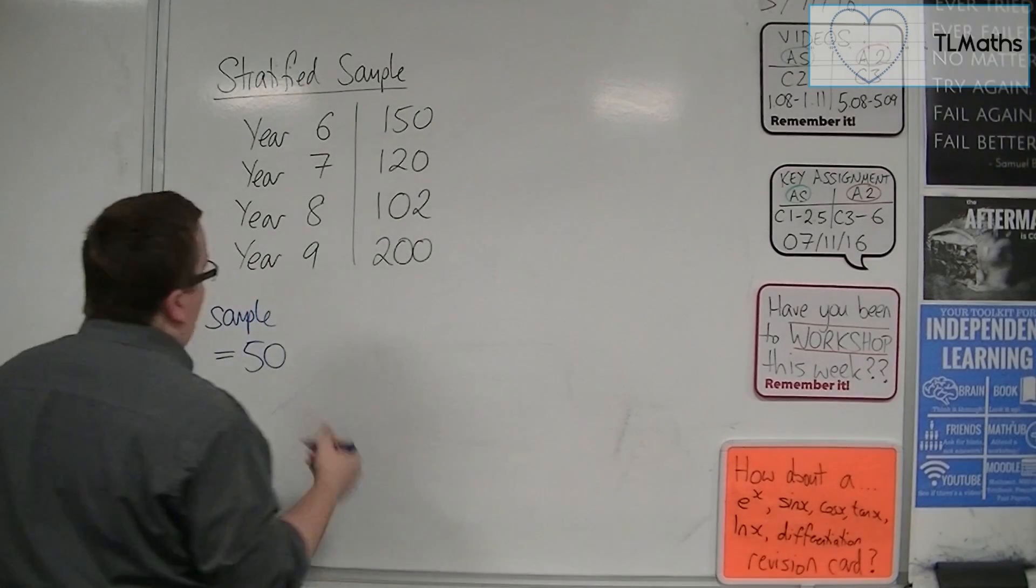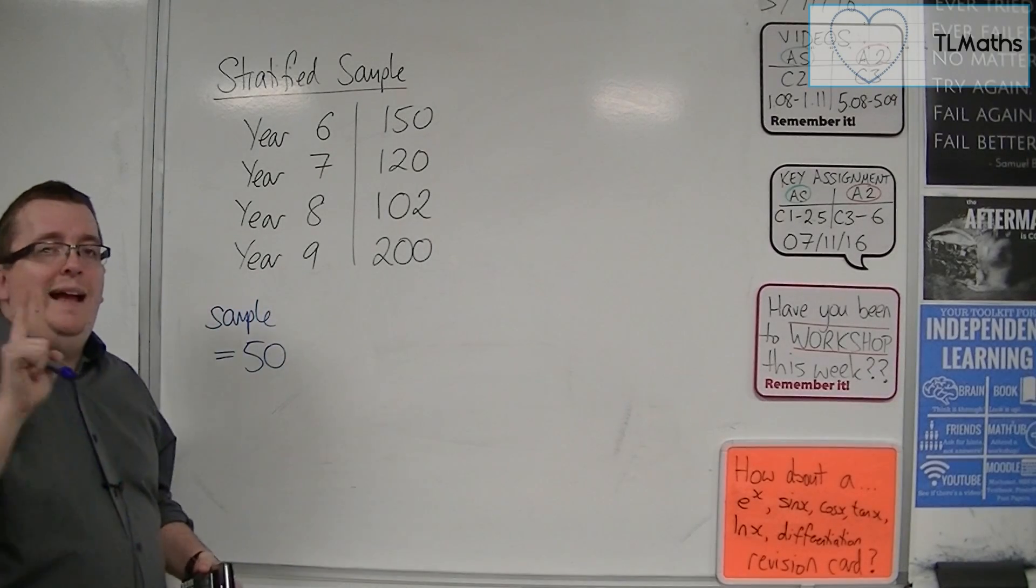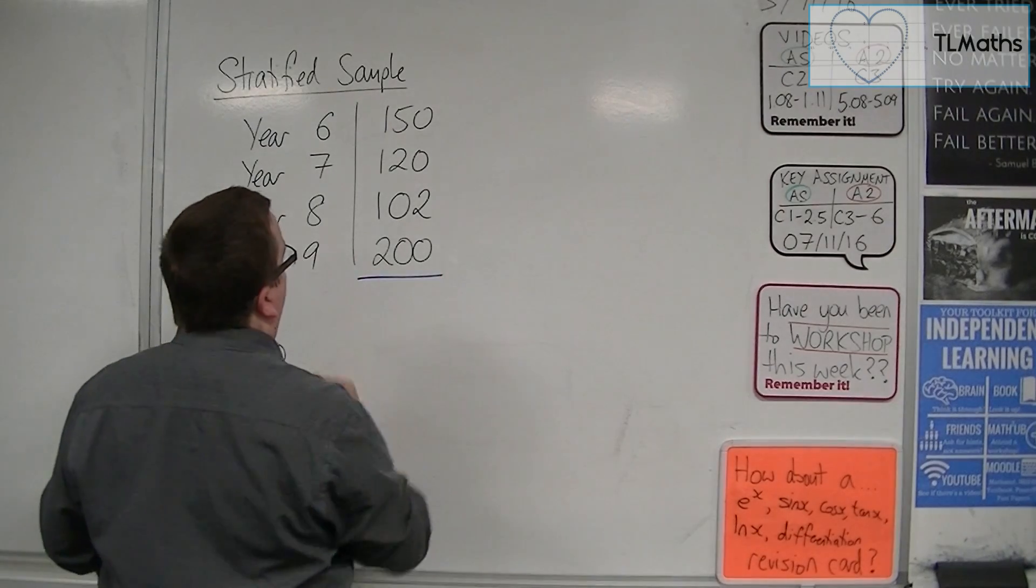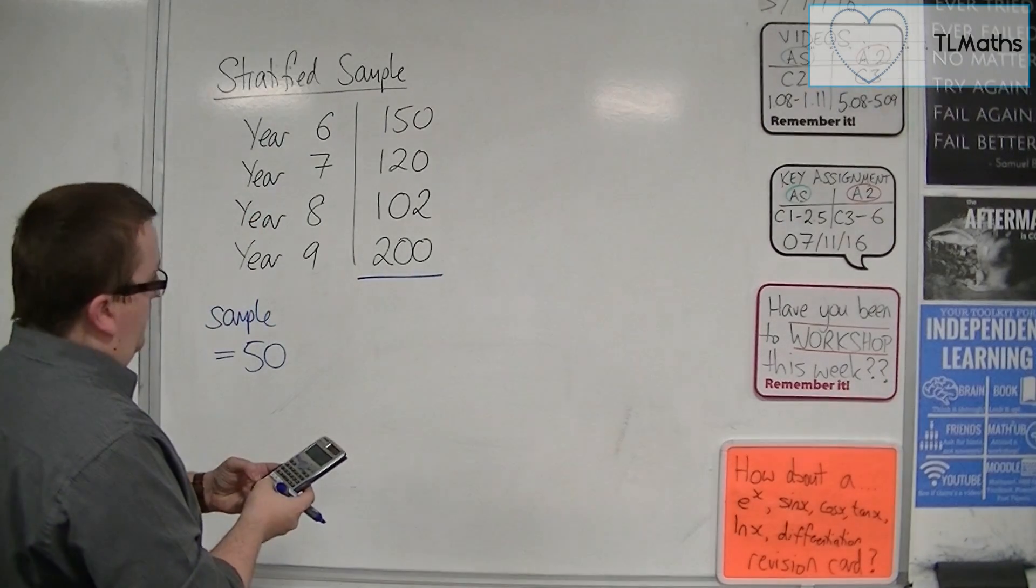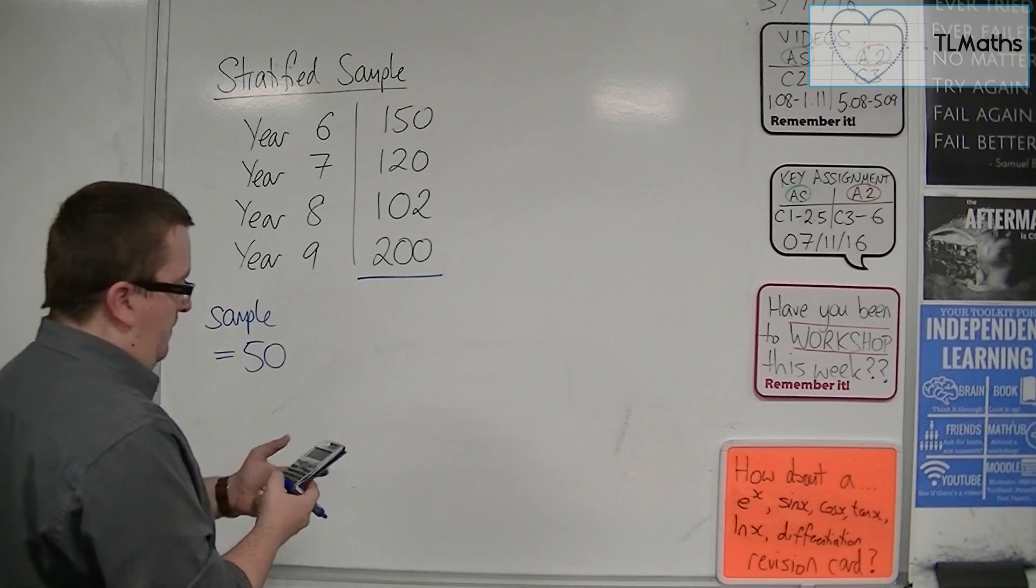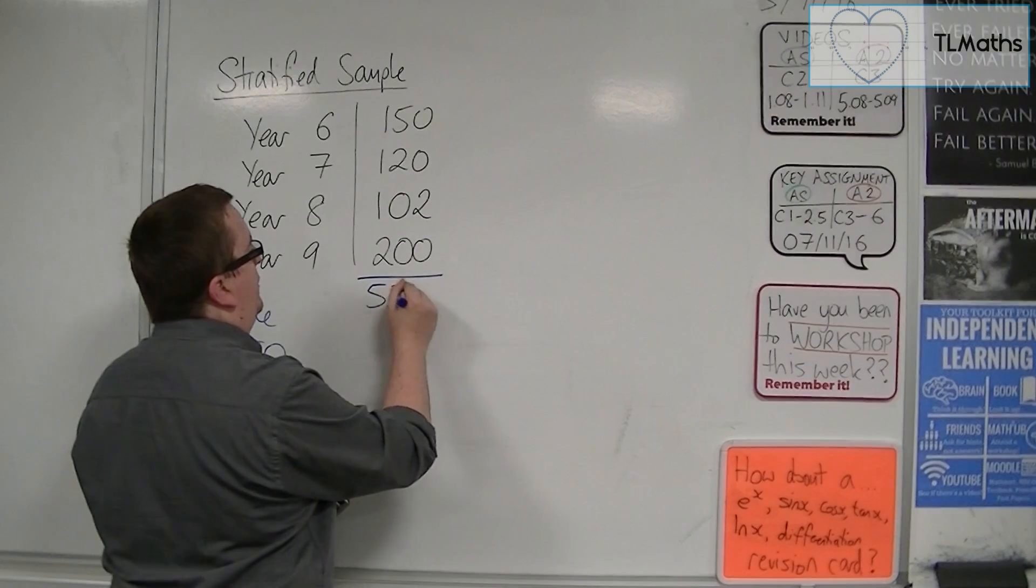So what I need to know is, first of all, how many students there are in the whole school for those four year groups. So I add them up. 150 plus 120 plus 102 plus 200. And that gets me 572.